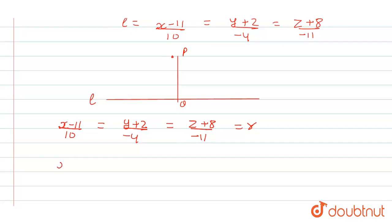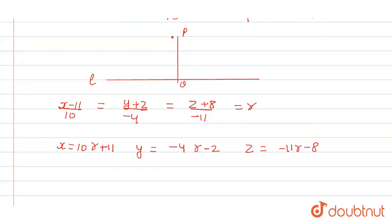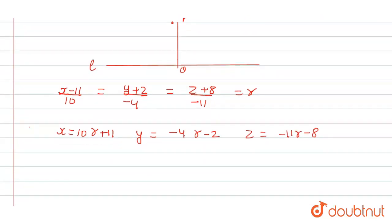So from here we get x value as 10R + 11, y value as -4R - 2, and z value as -11R - 8.